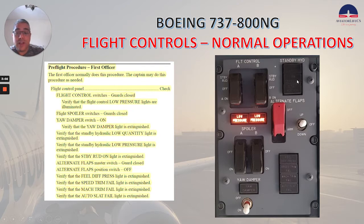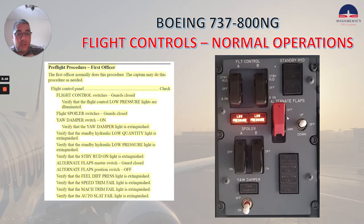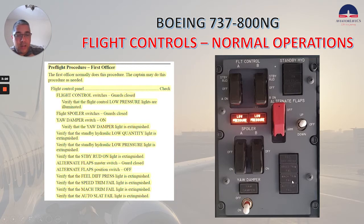Verify that the standby rotor-on light is extinguished. Continue to the alternate flaps master switch — guard closed. Alternate flap position switch off. Verify the field differential pressure, the speed trim fail, Mach trim fail, and auto slat fail lights are extinguished.